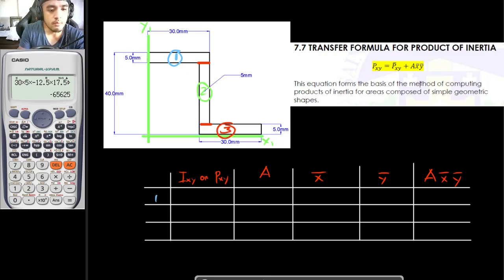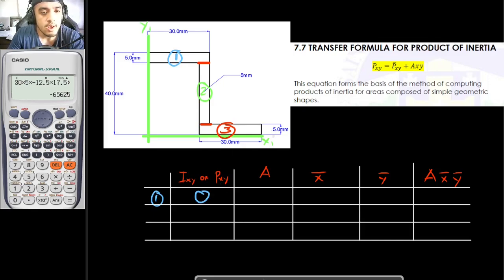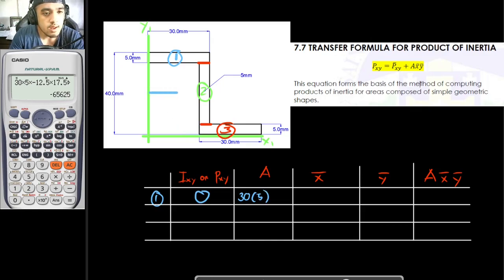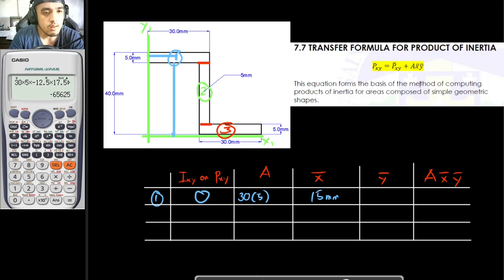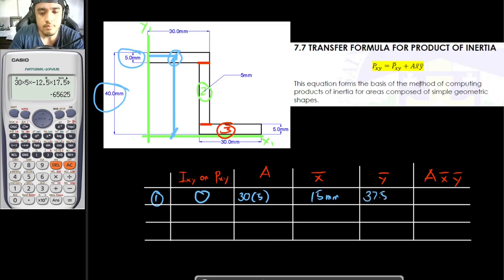For section 1 with the new axis x₁, y₁: since it's a rectangle, Ixy = 0. The area is 30 × 5. For x̄, from the reference axis to the centroid of section 1 is half of 30 mm = 15 mm. For ȳ, the full height is 40 mm and we subtract half of 5 mm, giving 40 − 2.5 = 37.5 mm.